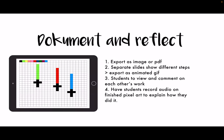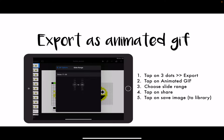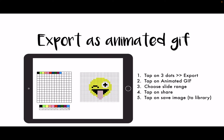A great final step is for students to document and reflect on their learning. You should export their work, and you can even let them view the work of others and comment on them. Students can also record audio on the finished pixel art to explain how they did it. To export as an animated GIF, tap on the three dots, choose animated GIF, select which slide range you want, share, and save the image — it's saved to the library.